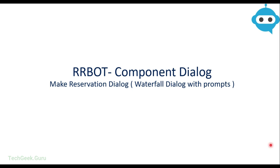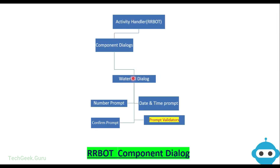In this session we are going to create our make reservation dialog, which will be a component dialog. Our waterfall dialog will contain a number of steps which will be run in a sequence when the dialog is triggered, and each step will contain one or another kind of prompt. We are going to use a number prompt, a text prompt, a confirmation prompt which will take a yes/no as a value, a date and time prompt, and we are also going to validate our prompt. We'll take one example of a number prompt and try to validate if the user has entered a correct number in a particular range.